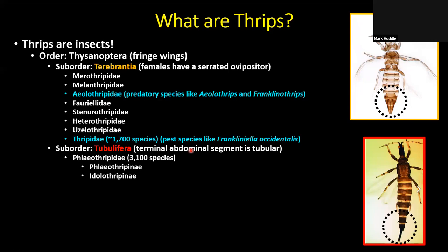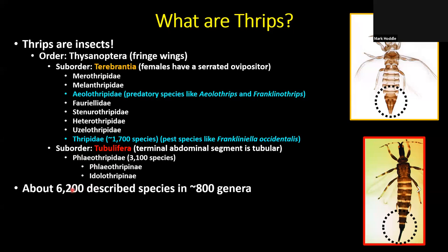The other suborder within the Thysanoptera is the Tubulifera. They're easy to recognize because the back ends of both males and females have tubes, which the females use for laying eggs. Within the Tubulifera there is one family, the Phlaeothripidae, with two subfamilies. Altogether, there are about 6,200 species of thrips that have been described, enclosed in about 800 different genera spread across these two suborders, Terebrantia and Tubulifera.